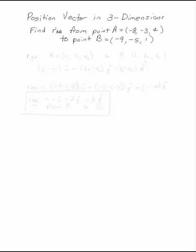The first thing to realize is that any position vector from A (a_1, a_2, a_3) to point B (b_1, b_2, b_3) is just B minus A, so (b_1 minus a_1)i plus (b_2 minus a_2)j plus (b_3 minus a_3)k.